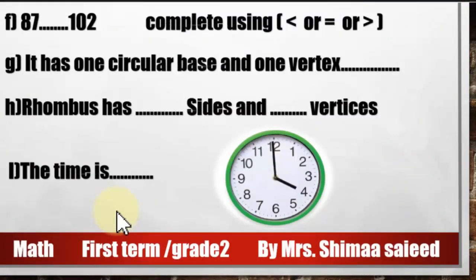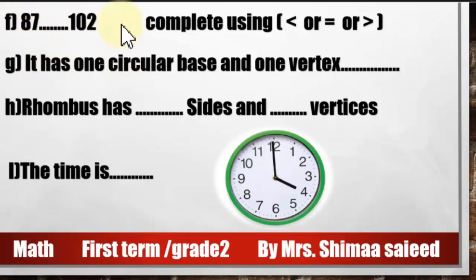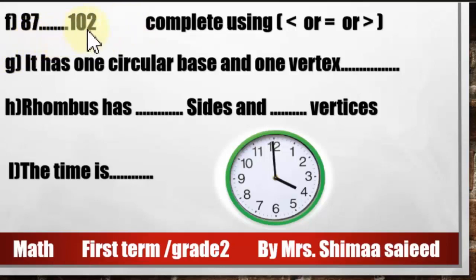Which one is greater: 87 or 102? 87 is a 2-digit number but 102 is a 3-digit number, so any 2-digit number is less than a 3-digit number. Therefore, 87 is less than 102.